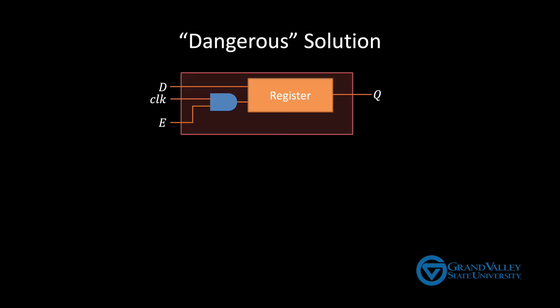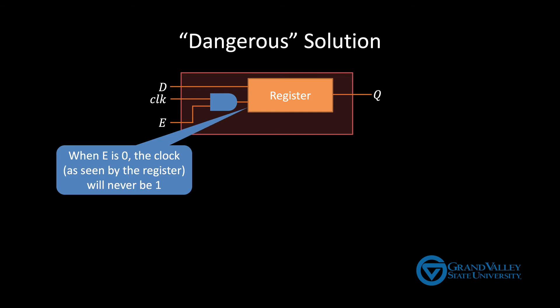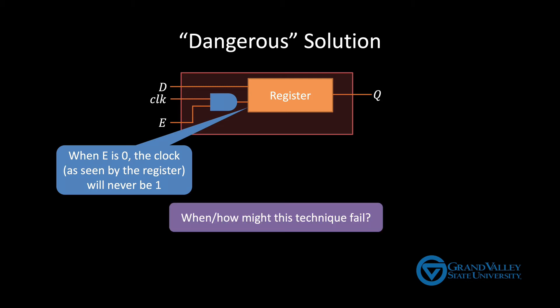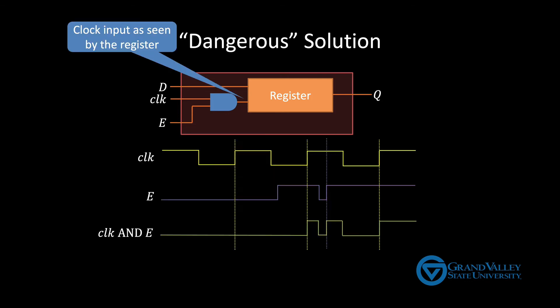So here's a simple but dangerous solution. The idea is that we put an AND gate on the clock. That way, if the enable input is zero, the register never sees the rising edge. But there's a subtle case where this might fail. Can you see it?